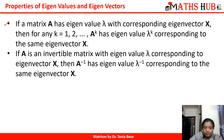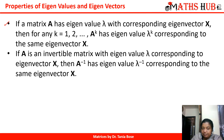The fourth property: if a matrix A has eigenvalue lambda with corresponding eigenvector x, then for any k = 1, 2, 3, and so on, A raised to the power k has eigenvalue lambda raised to the power k. So if any matrix A has eigenvalue lambda, then any power of that matrix will have the corresponding eigenvalue lambda raised to the power k.